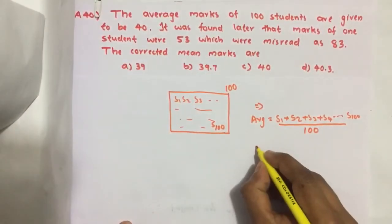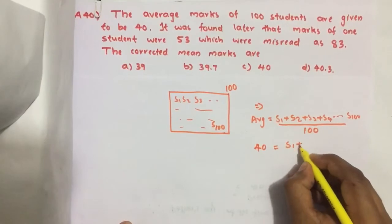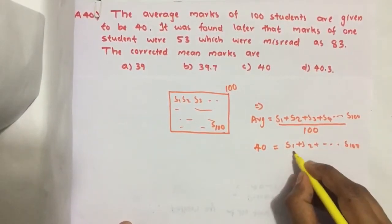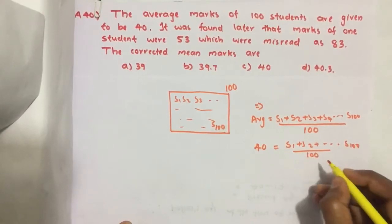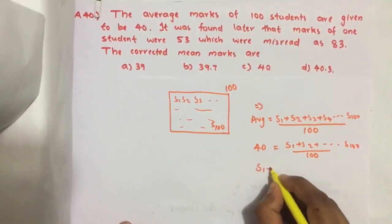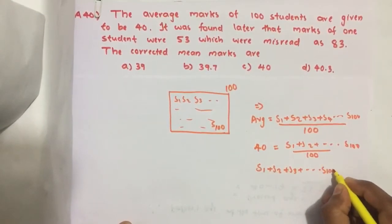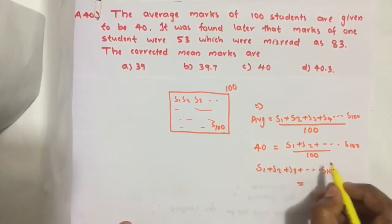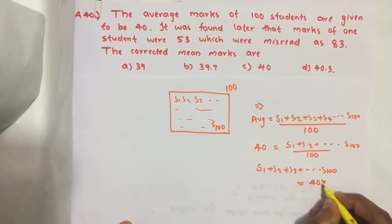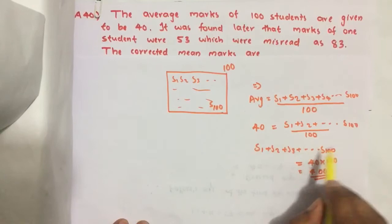Here it is given that 40 was the average. This S1 plus S2 of the hundred students, actually what they got earlier. So total marks S1, S2, S3 - they got as - just multiply this 100 to this side, then we get 40 into 100, that is equal to 4000. Before correction, with average 40, the total marks of the class was 4000.